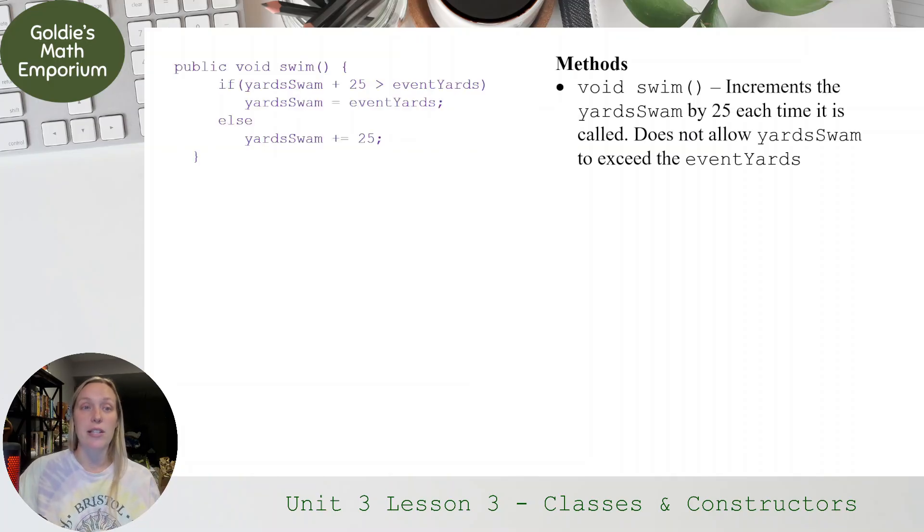So this might be an example of what that looks like. There's a few ways you could do this, too, by the way. This is not the only way to code this, but I put it as if. If you have your current yardsSwim, if you add 25 to it and it exceeds the eventYards, which remember I don't want, then the yardsSwim is going to max out at eventYards. So if you're doing the 100 freestyle and you swim 90 yards, if you add 25 to that, that's going to exceed 100. And you don't want to swim more than you have to. So if you swim 25 and it exceeds it, I just want you to swim up to eventYards. So that's why I have yardsSwim equals eventYards. Otherwise, if that's not the case, I just want to add 25 to yardsSwim. So that's how I handled that with that if statement.